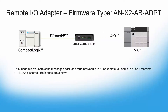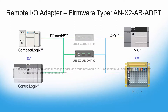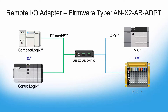Finally, we have the ANX2ABADPT, the Remote IO Adapter Mode. This is primarily used for messaging between PLCs on RIO and PLCs on Ethernet IP. In this mode, the ANX2 is a slave on both ends, appearing to the PLCs as a remote rack.